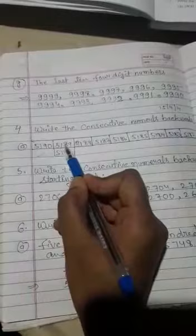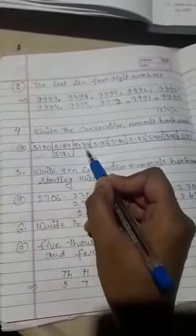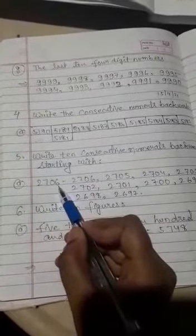5189 minus one is 5188. Okay, next question number five: write ten consecutive numerals backward starting with 2706.